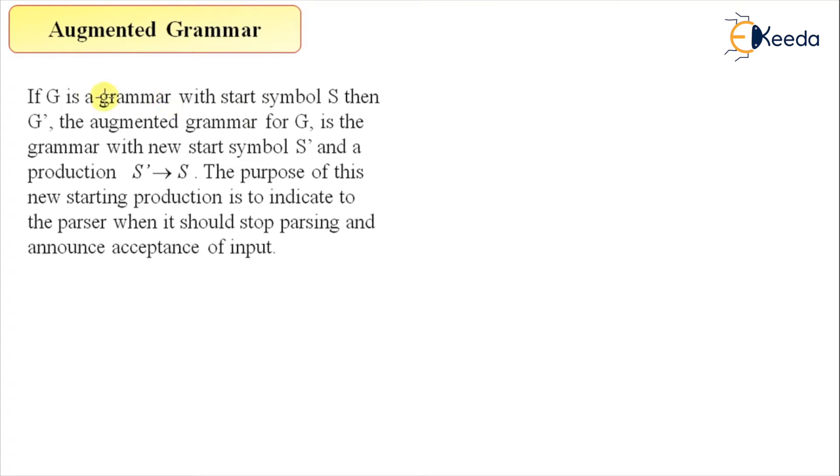So here, what the concept says is that if G is the grammar with the start symbol S in G, then G', the augmented grammar for G, is the grammar with new start symbol S' and the production rule S' derives S. So, augmentation means adding something, adding something new.